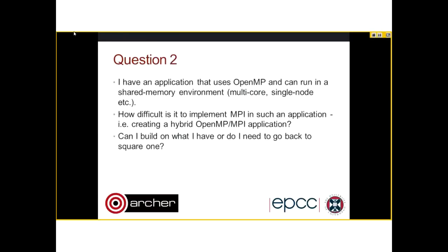The second question: I have an application that uses OpenMP and can run in a shared memory, multi-core, single-node environment. How difficult is it to implement MPI in such an application — creating a hybrid OpenMP/MPI application? Can I build on what I have, or do I need to go back to square one? MPI is a very different parallelization model because it's distributed memory. If two processors need to access the same data, they must explicitly communicate with each other, whereas in OpenMP you can have shared arrays and different threads reading and writing to the same array.